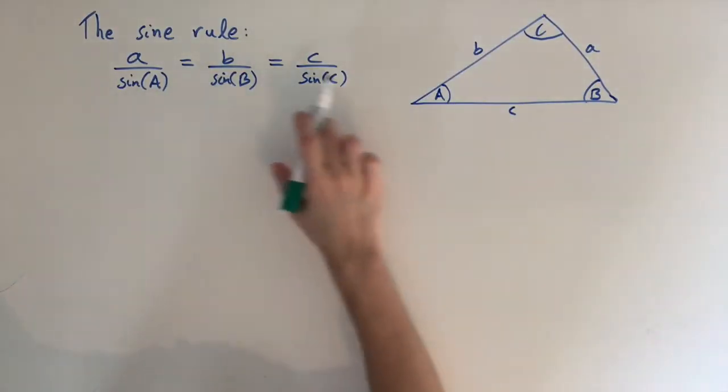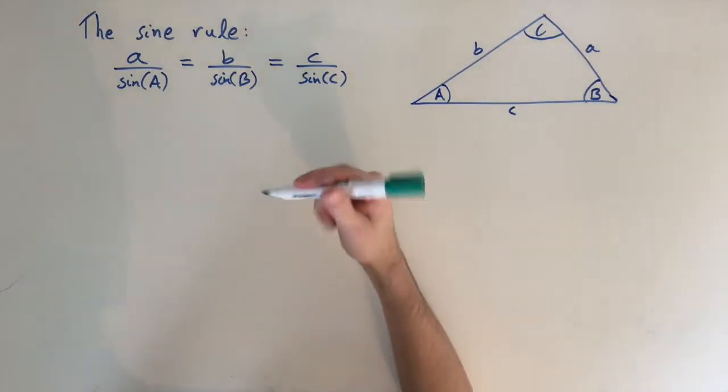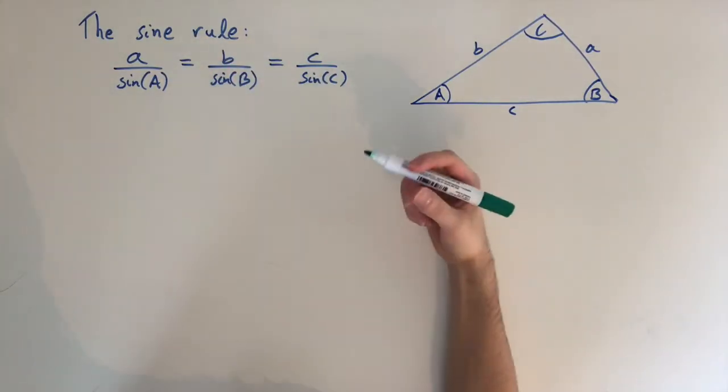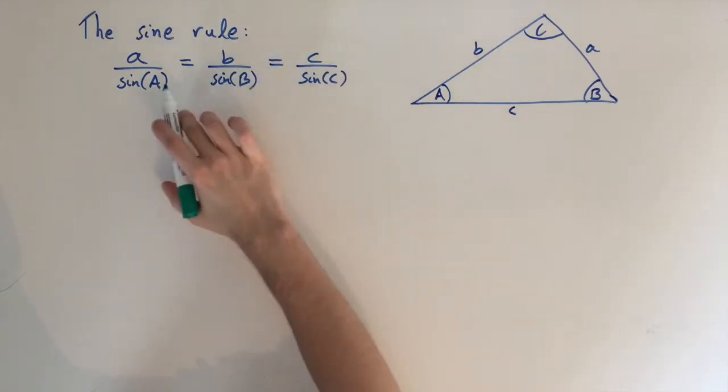Okay, so in the previous video we saw some examples of using the sine rule. Now on this one I want to talk about the proof of this, so how do we show this is always true for any angles a, b, and c and lengths a, b, and c.